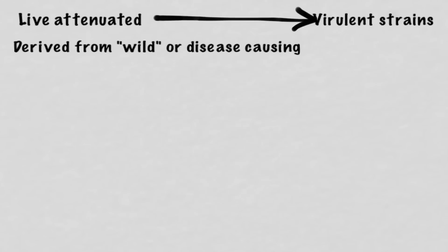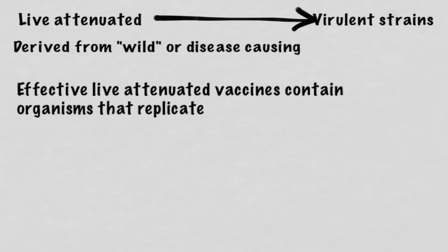Since we don't really encourage people to attend pox parties, we derive a live or attenuated strain from the wild or disease-causing strain. They become attenuated or weakened in a laboratory setting through mutations that typically appear after repeated culture. An effective live attenuated vaccine contains organisms that must replicate in the vaccinated person enough to stimulate an immune response. Live attenuated vaccines produce immunity in most recipients with only one dose, except for those administered orally, like the Sabin vaccine for polio or flu mist.